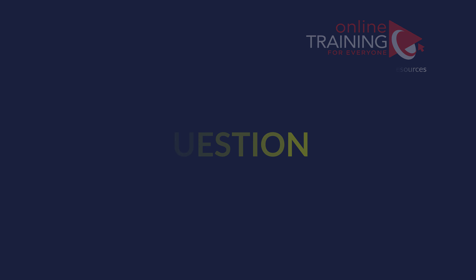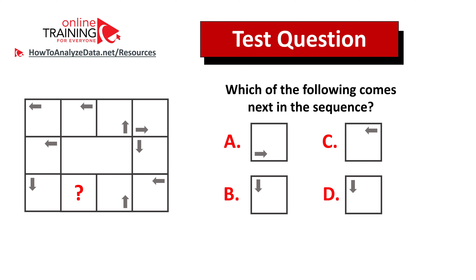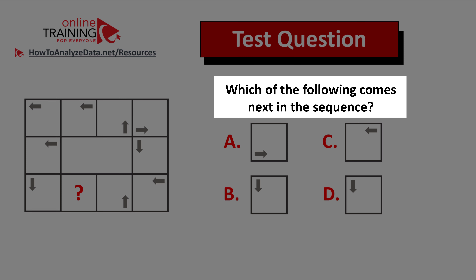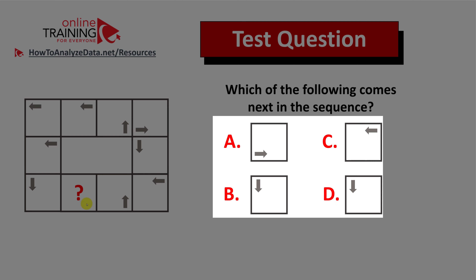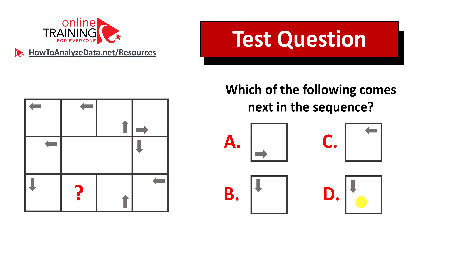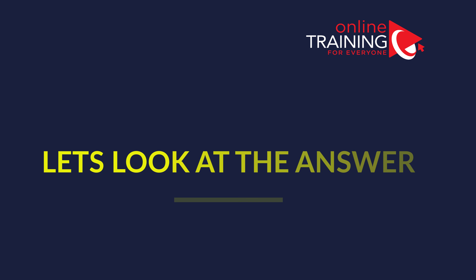Let me share with you a tricky question which tests your pattern recognition as well as logical reasoning skills. Which of the following comes next in the sequence? You're presented with a rectangle which has multiple squares, and one of the squares is missing — it has a question mark inside — and you have four different choices: A, B, C, and D. Take a close look to see if you can come up with the answer. Now might be a good time to pause this video.